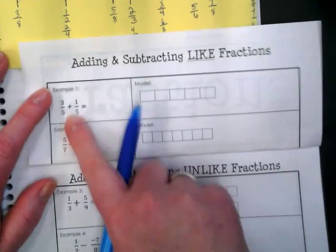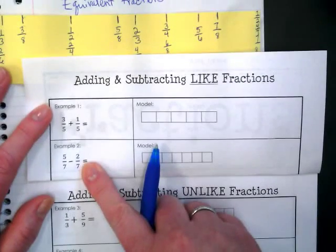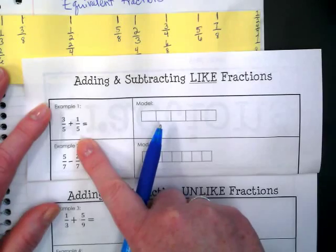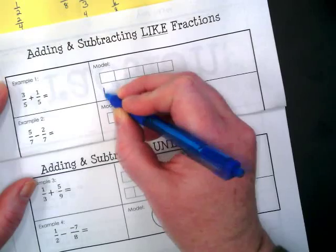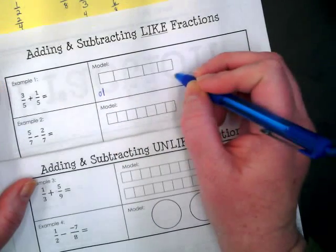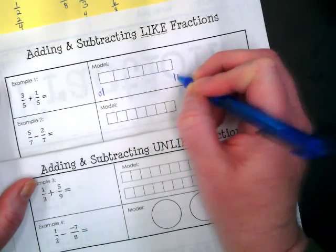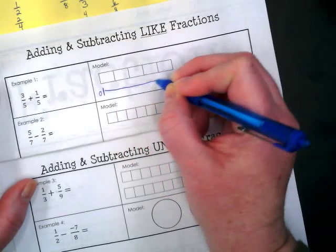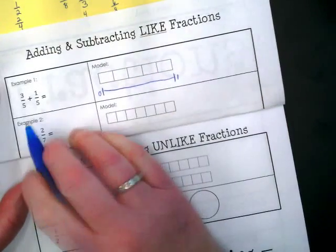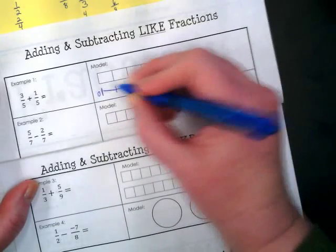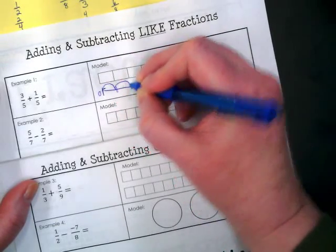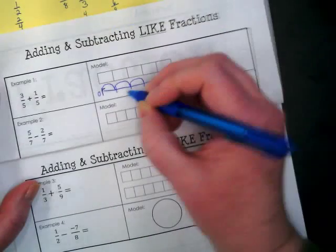Because even though we didn't do fifths and sevenths on our number line, I want you to think about what this would look like on a number line. So if I have zero and one, and I'm going to be showing my number line for three fifths. This would be one fifth, two fifths, three fifths.